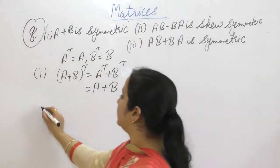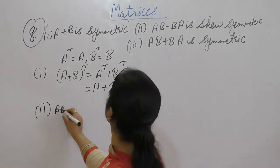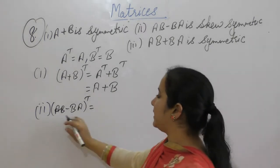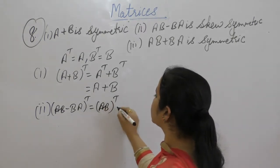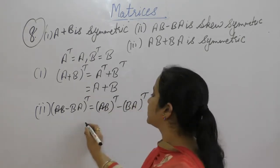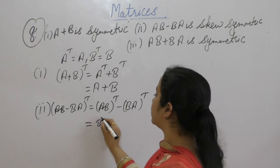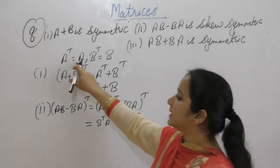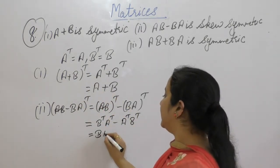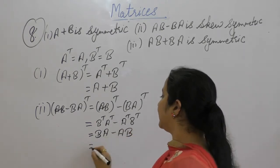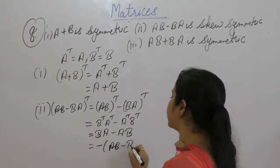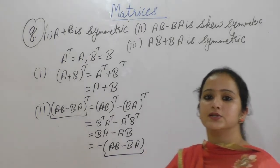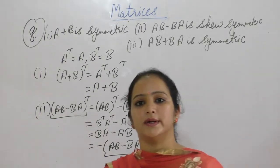For the second part, AB minus BA is skew-symmetric. Use the property of transpose: (AB - BA) transpose equals B transpose A transpose minus A transpose B transpose. Since A and B are symmetric, B transpose is B and A transpose is A. Taking the negative sign common gives AB minus BA. So the transpose of this matrix is the negative of that matrix. Therefore AB minus BA is a skew-symmetric matrix.